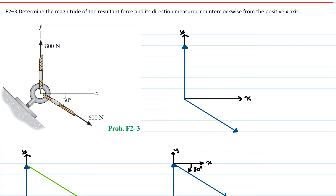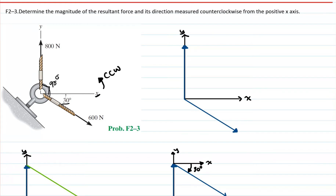Hi, this is problem F2-3, Engineering Mechanics and Statics for Hibbeler 14th edition. This problem asks us to determine the magnitude of the resultant force and its direction measured counter-clockwise from the positive x-axis. In this problem we have a screw eye and two ropes. One rope is pulled at 600 Newton at a 30 degree angle from the x-axis, and the second rope is pulled at a force of 800 Newton at a 90 degree angle from the x-axis.